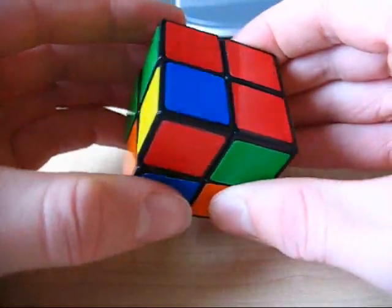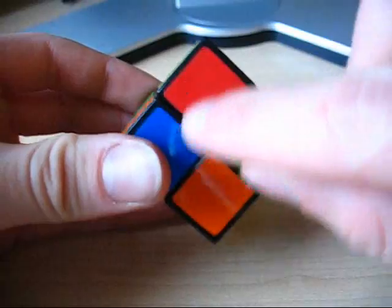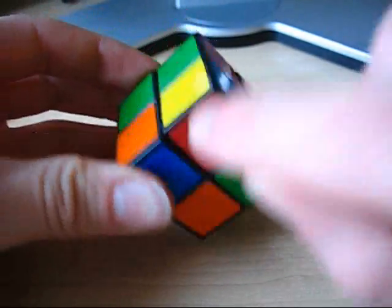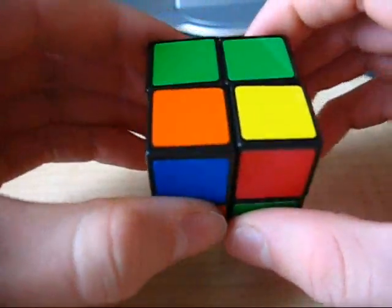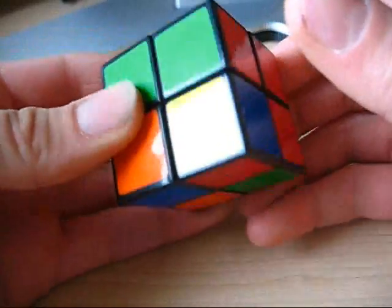You need to do what's called a diagonal swap. It takes this piece, puts it right there, and this piece, and puts it right there. So basically it flips two corners at once.